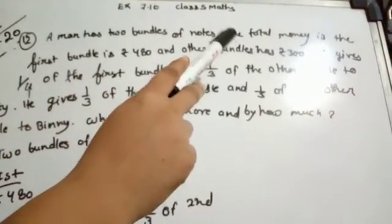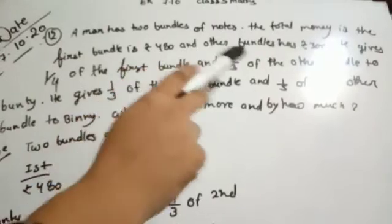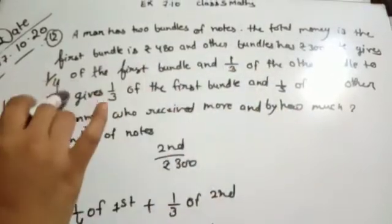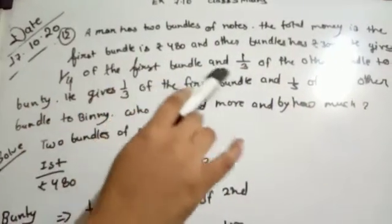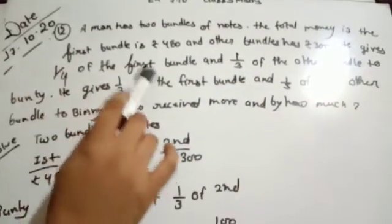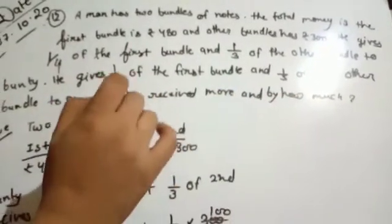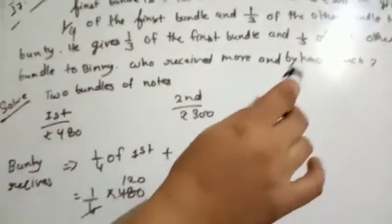A man has two bundles of notes. The total money in the first bundle is ₹480 and the other bundle has ₹300. He gives 1/4 of the first bundle and 1/3 of the other bundle to Bunty. He gives 1/3 of the first bundle and 1/5 of the other bundle to Bini. Who received more and by how much?